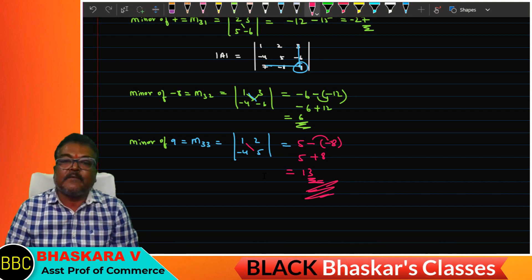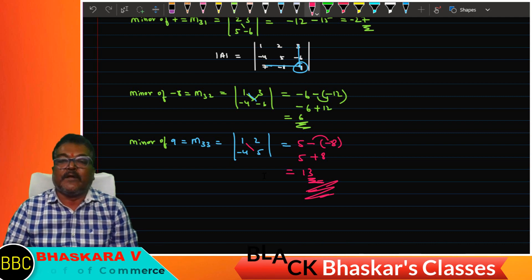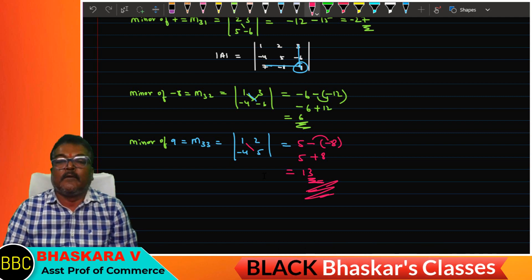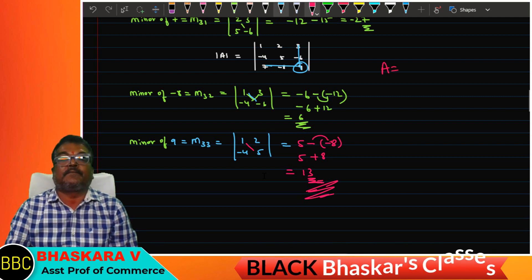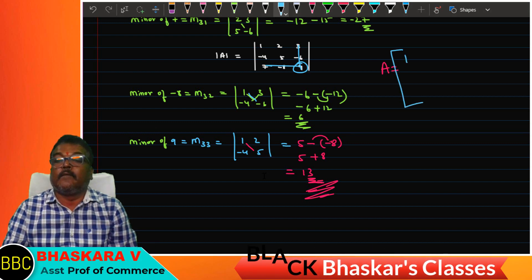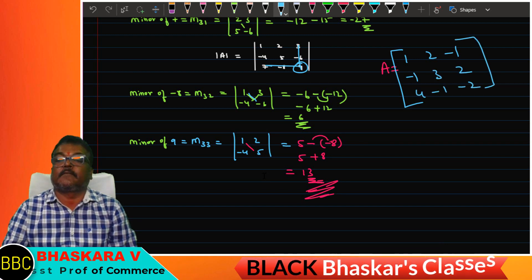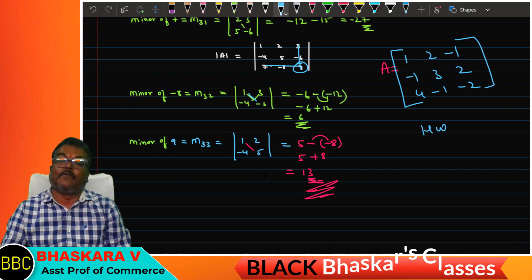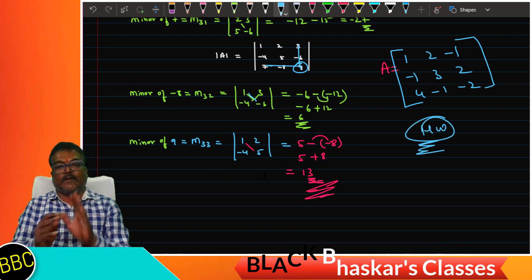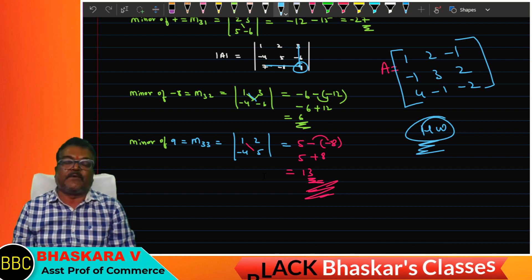Now, minor of a matrix — find the minor of all the elements of a matrix. Matrix A equals: 1, 2, minus 1; minus 1, 3, 2; 4, minus 1, minus 2. This is your homework — all students calculate all the minors. Practice, students.